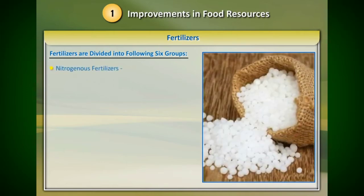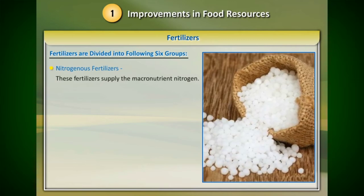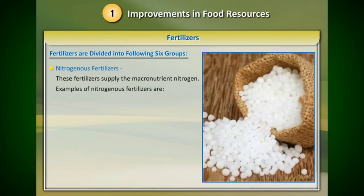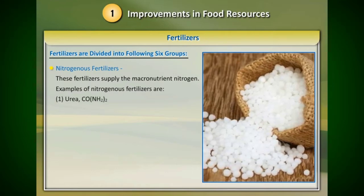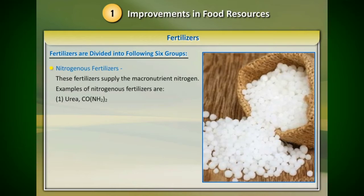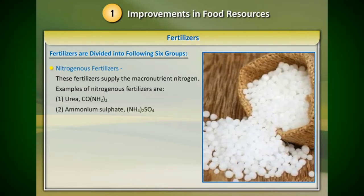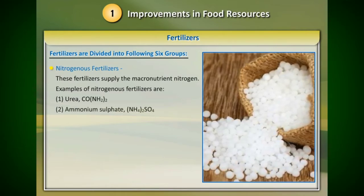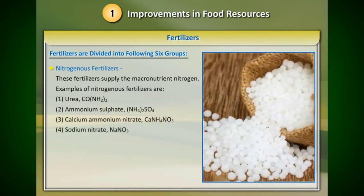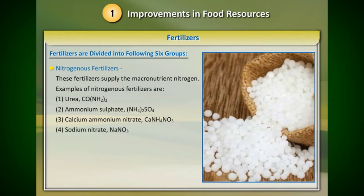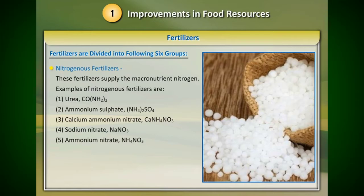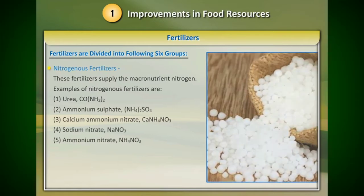One: nitrogenous fertilizers. These fertilizers supply the macronutrient nitrogen. Examples of nitrogenous fertilizers are: 1) urea CO(NH₂)₂, 2) ammonium sulfate (NH₄)₂SO₄, 3) calcium ammonium nitrate, 4) sodium nitrate NaNO₃, and 5) ammonium nitrate NH₄NO₃.